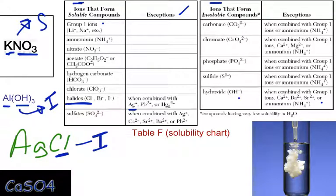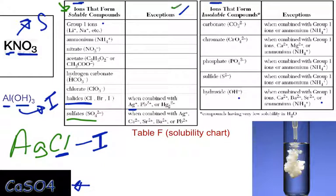Moving on to calcium sulfate. We look for sulfates, and we see sulfates are right here in the bottom of the first soluble column. Sulfates are normally soluble, so before we write that down, we check our exceptions. We see that calcium is right there in the exceptions list. So calcium will turn this normally soluble sulfate into insoluble. So we have one soluble compound and three insoluble ones so far.